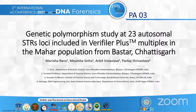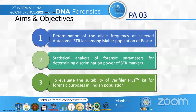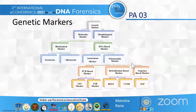I'll be discussing my research work on genetic polymorphism study at 23 autosomal STR loci included in the Verifiler Plus multiplex in the Mahar population from Bastar. This is a population genetics-based work with the aim of determining allelic frequency along with other forensic parameters such as polymorphic information content, paternity index, power of discrimination, matching probability, etc., in order to evaluate the genetic variation among the population and determine the individualization power of 23 STR loci that will substantiate the effectiveness of the Verifiler Plus kit for forensic application in the Indian population.